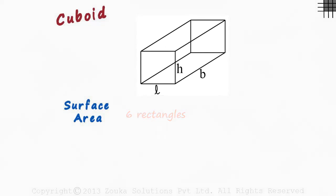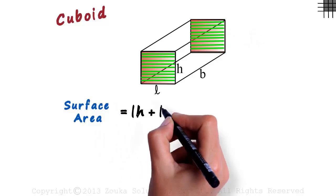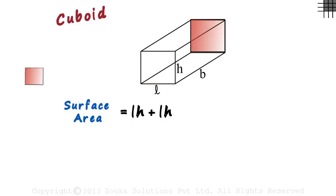The area of the rectangle we see in the front will be L multiplied by H, and the area of the rectangle at the back will also be L multiplied by H. So the sum of these two will be LH plus LH. Let's remove these two now.